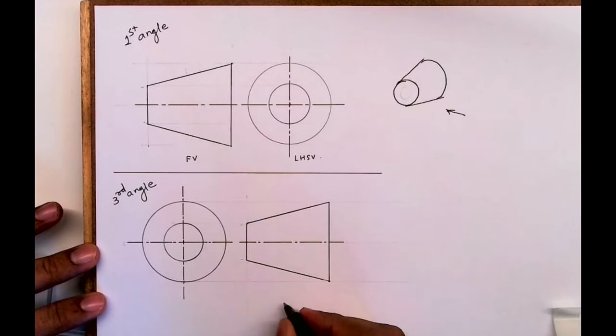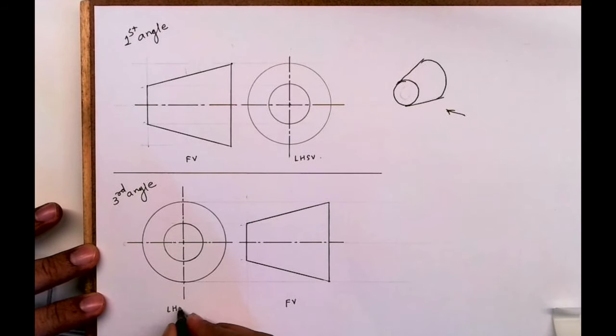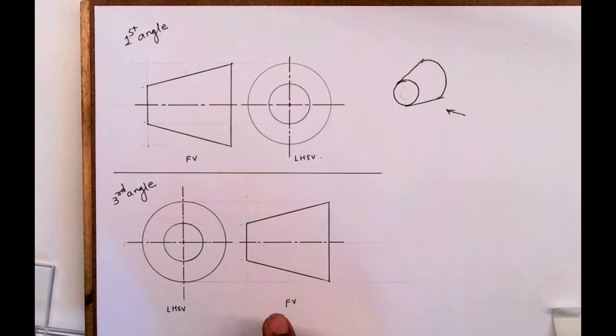In third angle, front view will be this and the left hand side view will be on the left side. So this is the difference. You should keep this in mind. Now many times people have asked me how to draw this.